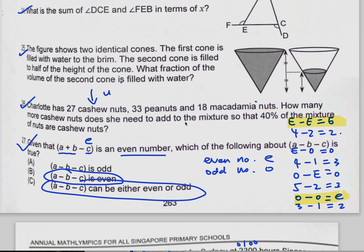So odd minus odd — if your c is odd minus odd, that means this will add to odd. So a plus b equals an odd number, meaning one of them must be different — if this is E then this must be odd.